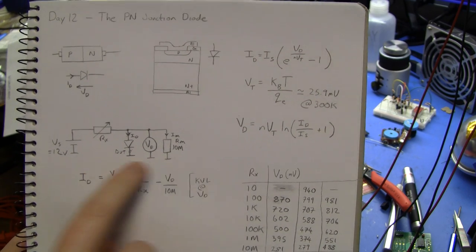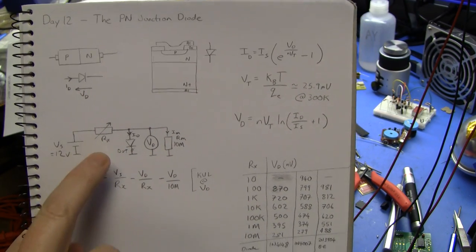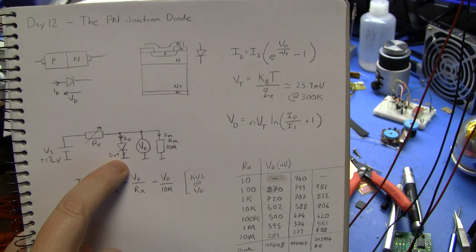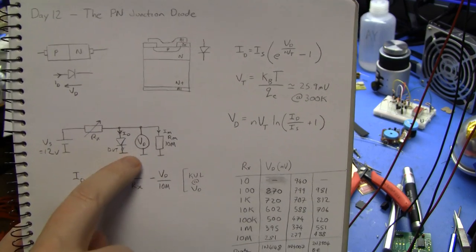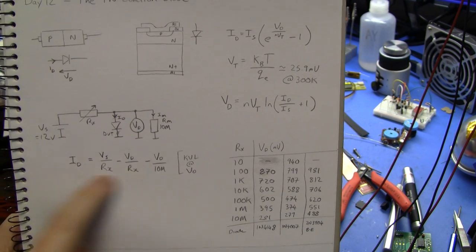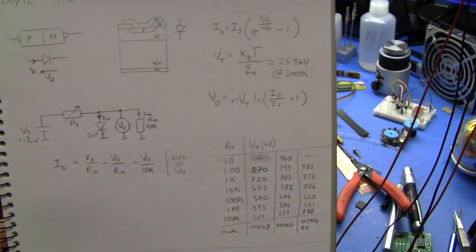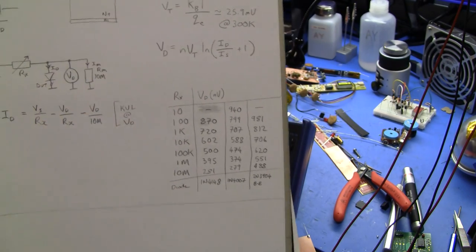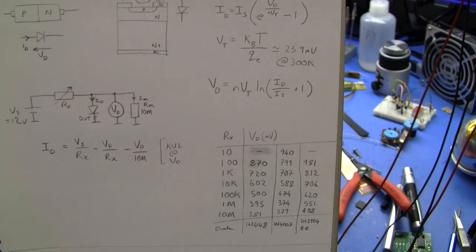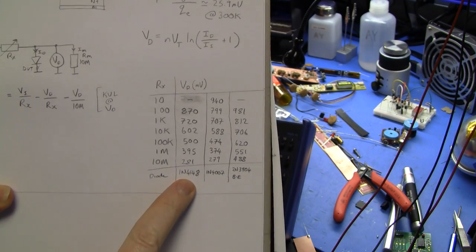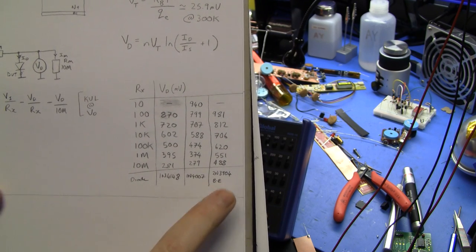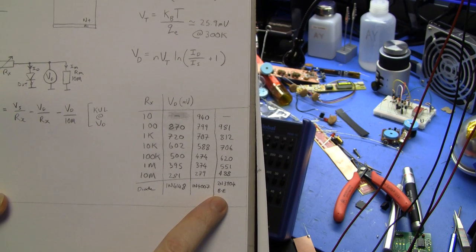What I did is I set up a circuit like this. I have a 12 volt power source and a variable resistance here, a diode. I don't allow this resistance to get small enough such that the current through the diode is enough to destroy it. I measured the voltage across that diode with a multimeter. The multimeter has a finite input impedance so as I make this resistance large I need to compensate for that. I just did some KVL at this VD node. I collected data for RX from 10 ohms to 10 megs so that gives you current ranges from 10 to the minus 6 up to like an amp. I did it for 1N4148s, 1N4007s and also the base emitter junction of the 2N3904.